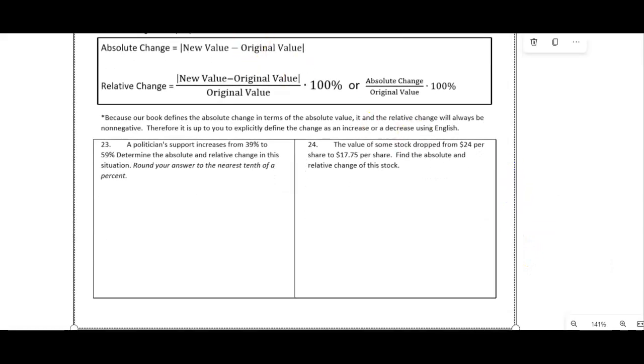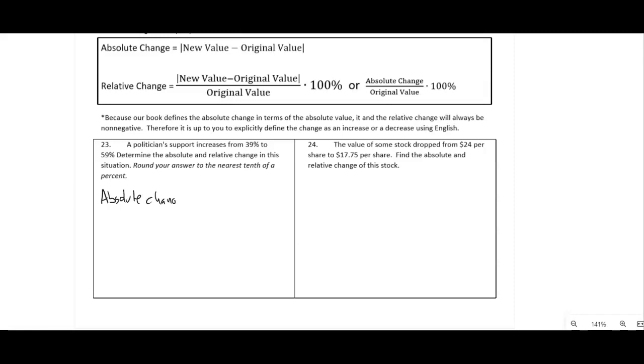Okay. So, new value minus old value. So the absolute change. This is a politician support. Increases from 39% to 59%. So, the new value is the after value, 59%, minus the original value, 39%, and that's just 20%. We can see it's going up. So, we would say this is an increase. Now, we wouldn't say an increase of 20% because that's how we answer the relative change. This is an absolute change.